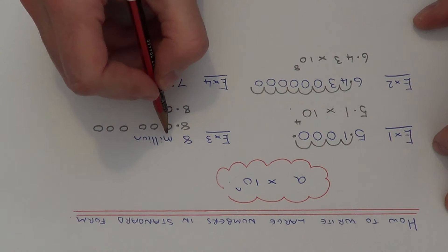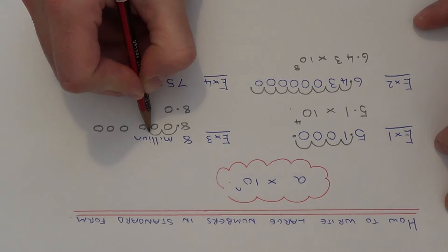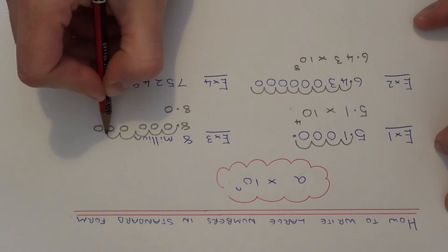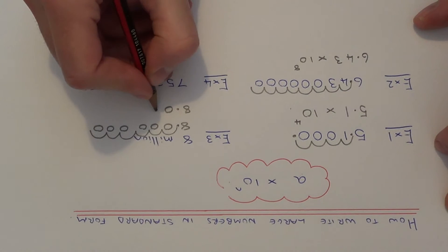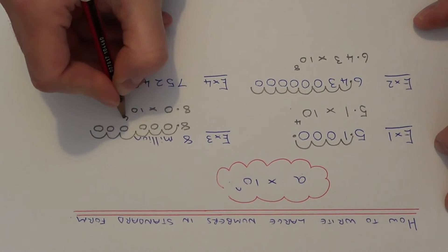So again, how many places have we moved the decimal point? 1, 2, 3, 4, 5, 6. So it's times 10 to the power of 6.